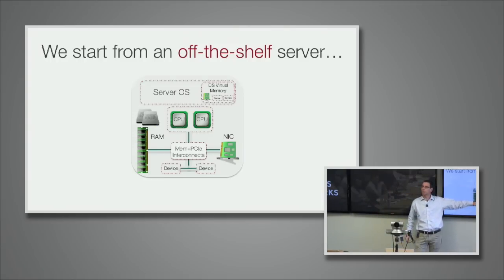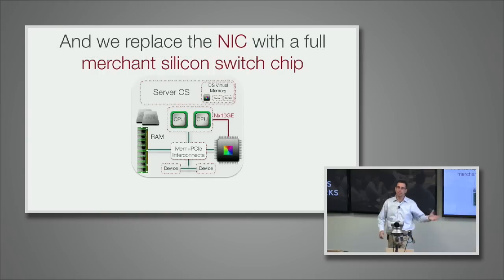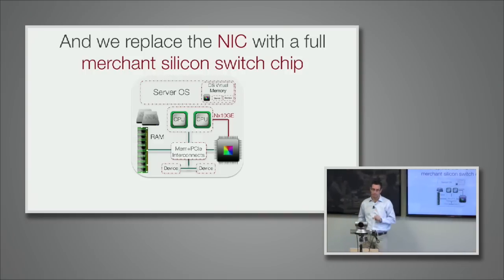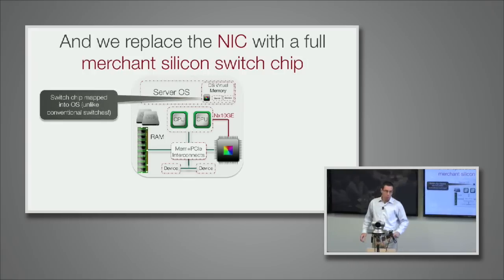I've highlighted one particular peripheral device, the NIC, because at Pluribus what we've done is extremely simple: we've just replaced the NIC with the most powerful switch chips, merchant silicon that money can buy today.